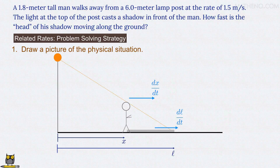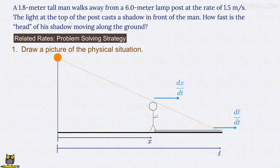Now clearly, the faster the man walks, the faster the head of his shadow moves too, that is, the larger dl/dt is. The rates dx/dt and dl/dt are thus somehow related. Our job is to find that relationship.